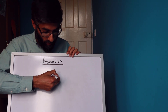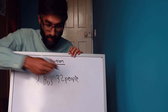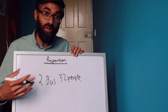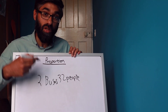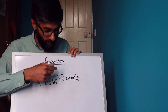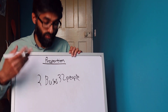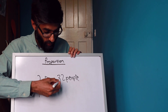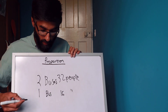Two buses transport 32 people. We need to find out how many people three buses transport. Just like the previous example, we need to work out how many people one bus transports. So one bus transports 32 divided by 2, which is 16 people.